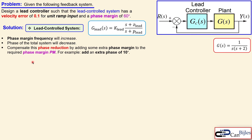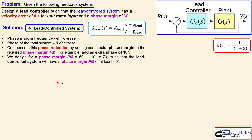Since the lead controller increases the phase margin frequency, the phase of the total system will decrease at the new frequency. To compensate, we add extra phase — typically 5 to 10 degrees — to the required phase margin. We add 10 degrees, so the lead controller must provide at least 70 degrees total, with 25 degrees already from the P controller, meaning the lead itself needs to contribute 45 degrees.